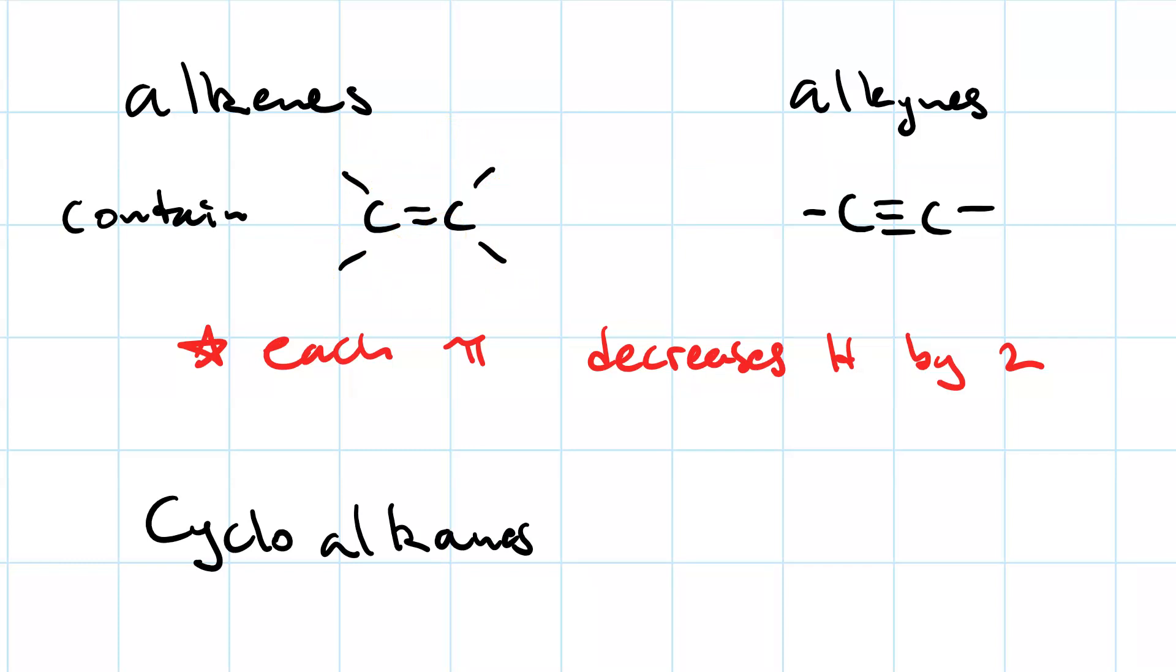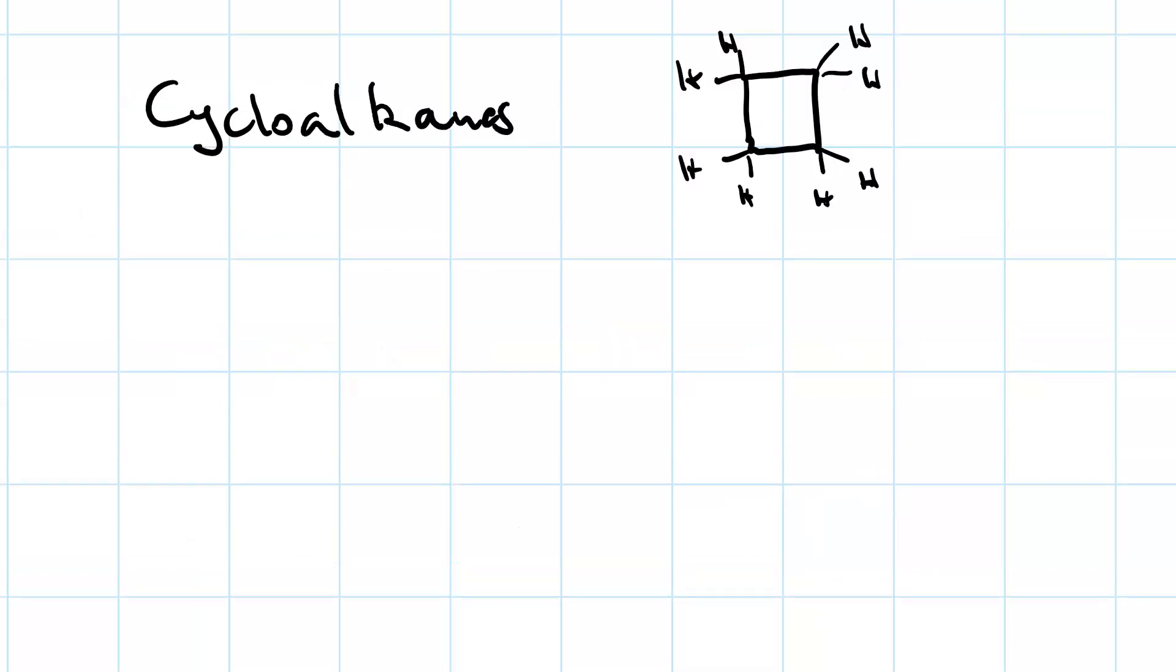Cycloalkanes are rings. Here's a four-membered ring. Don't forget the implied hydrogens here. There's two at each corner. So this one has the chemical formula C4H8. A ring decreases the number of hydrogens by two as well.